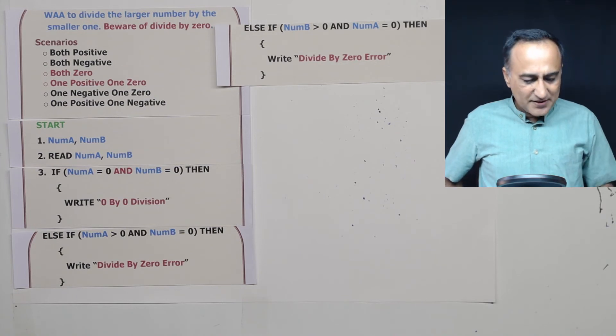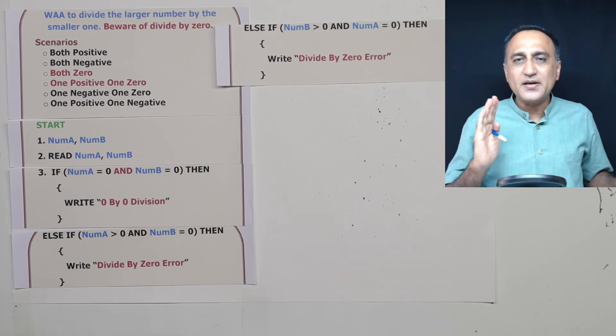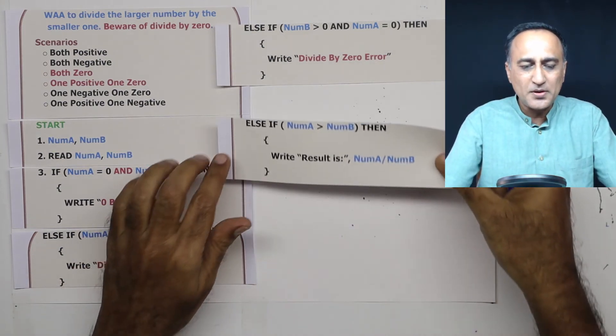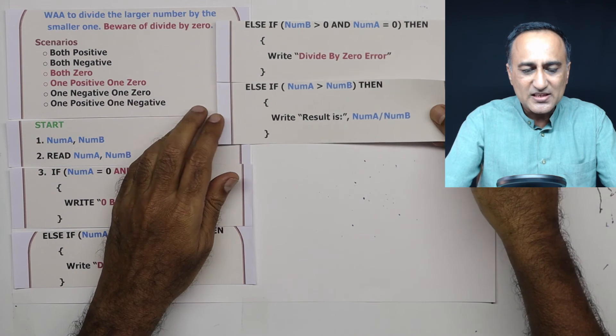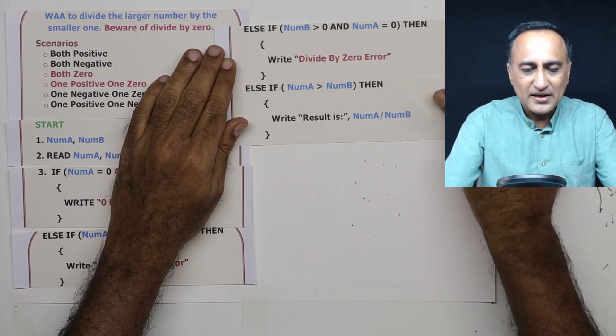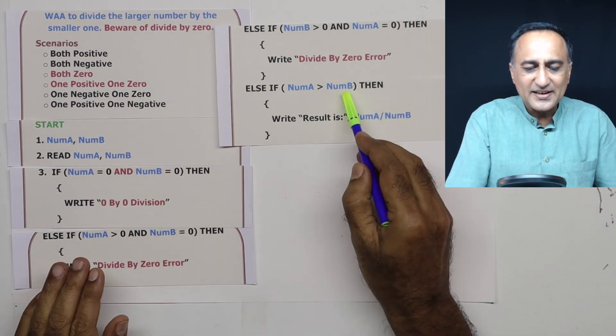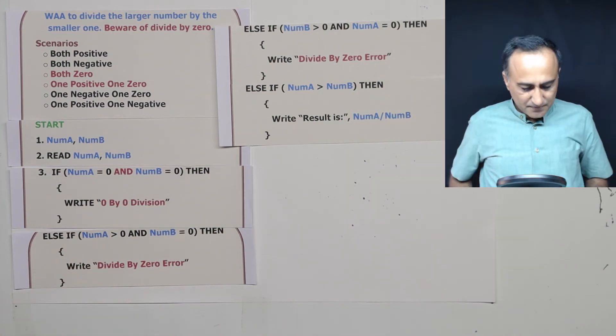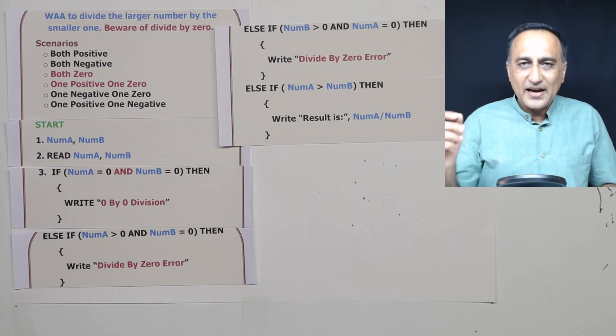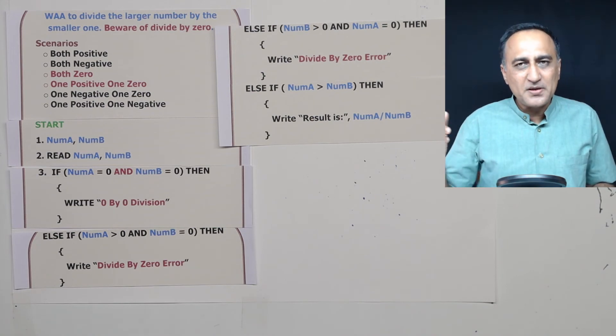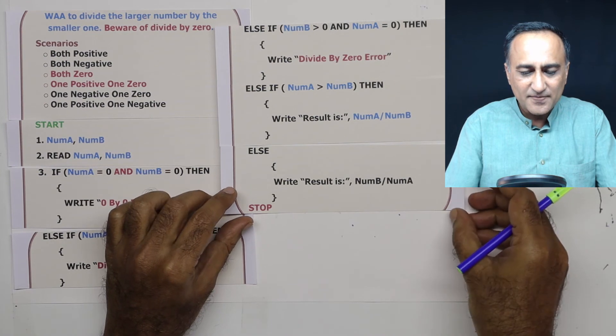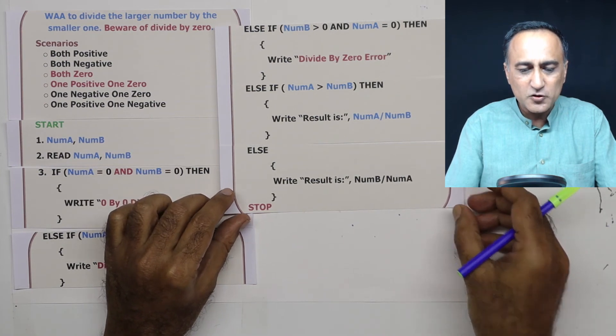The next case is quite simple. Either A has to be greater than B or B has to be greater than A or both have to be equal. So in this case what is going to happen here is if A is greater than B the result is number A divided by number B. Finally, either A has to be equal to B or B has to be greater than A. In that case this else condition will take care of that particular issue also.